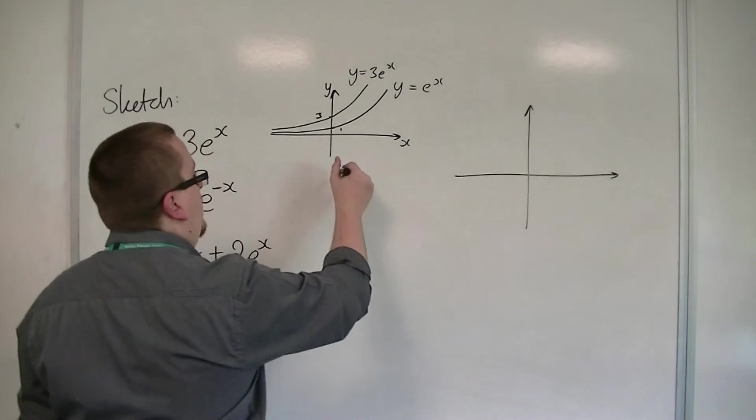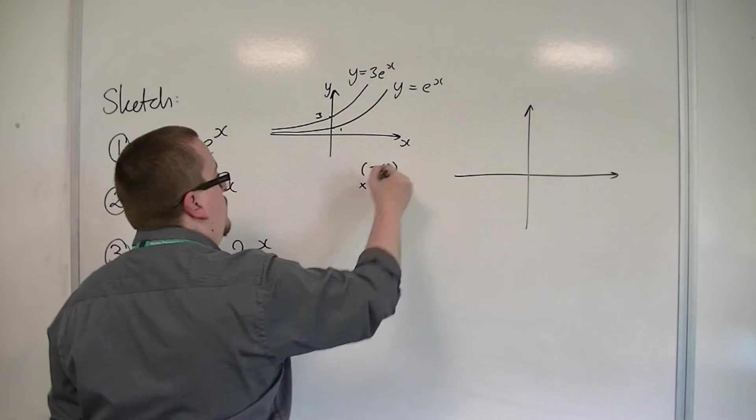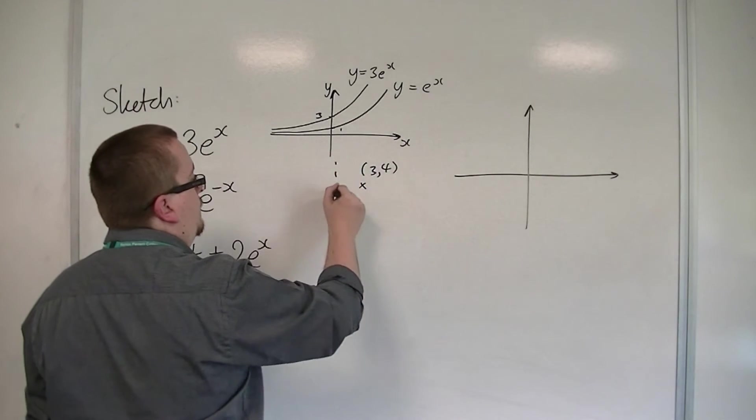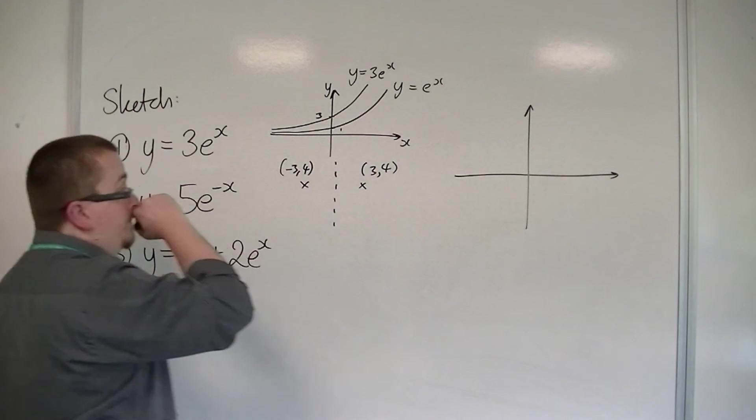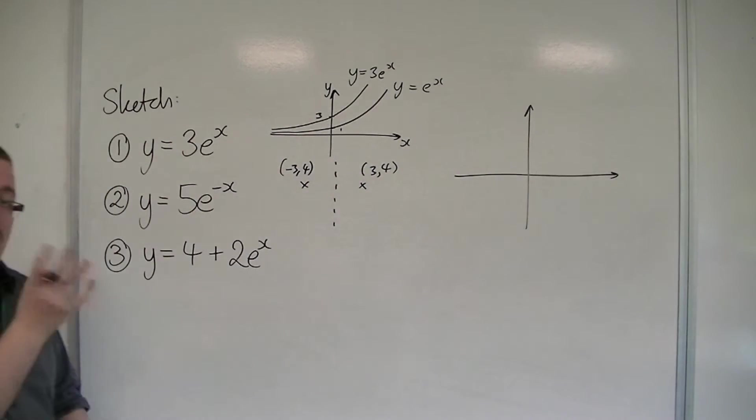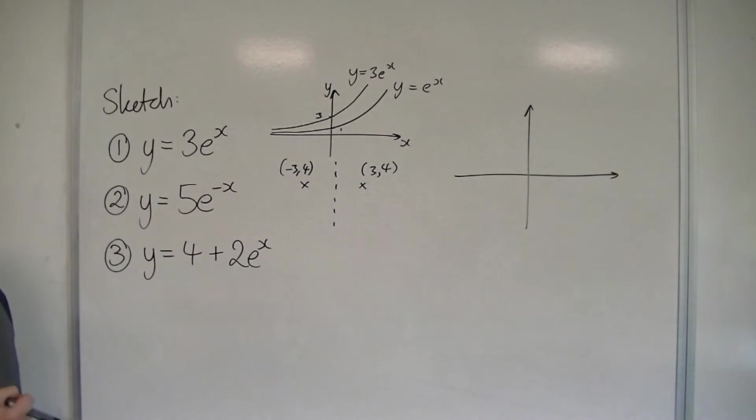So what that means is that if you've got an x-coordinate at, say, (3, 4), then it's become (-3, 4). So the x-coordinates have changed sign, and this must be a reflection in the y-axis.